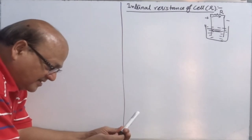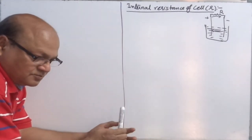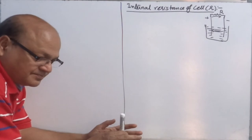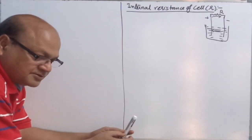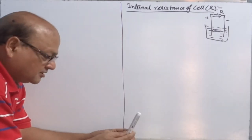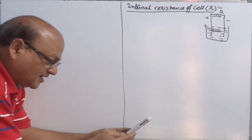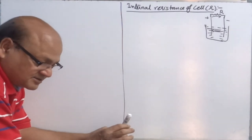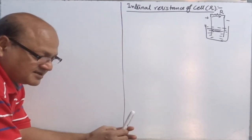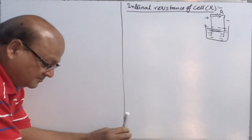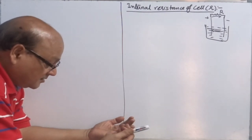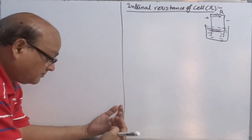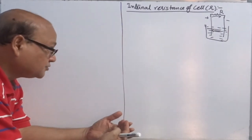When the positive and negative ions of an electrolyte move through the electrolyte, their motion is obstructed by other molecules and other ions. Therefore, an electrolyte also obstructs the motion of ions. In another way, we can say it opposes the flow of current. So the internal resistance of a cell is the opposition offered by the electrolyte of a cell to the flow of current.